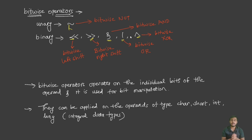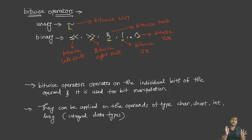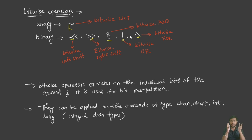The most important thing about bitwise operators is that they operate on the individual bits of the data or operand. We usually use bitwise operators for bit manipulation. For example, if we have data stored in 8 bits and we want to manipulate those 8 bits, we can make use of bitwise operators. So remember: bitwise operators are usually used for bit manipulation.